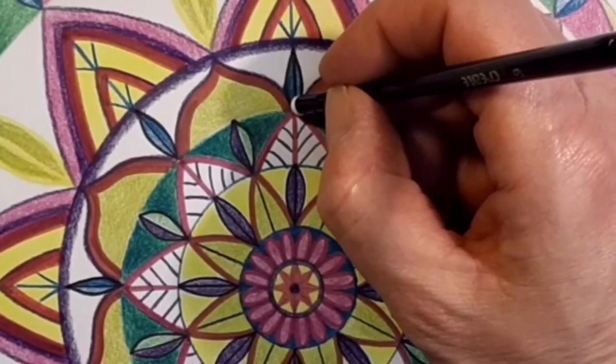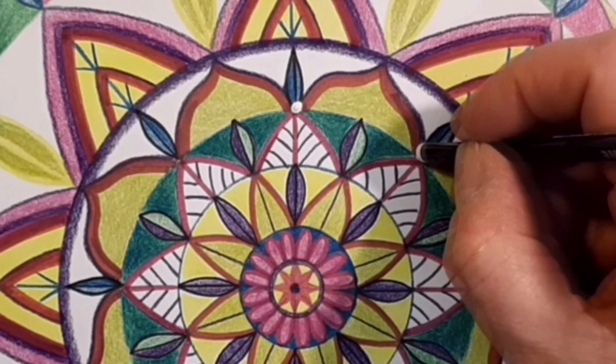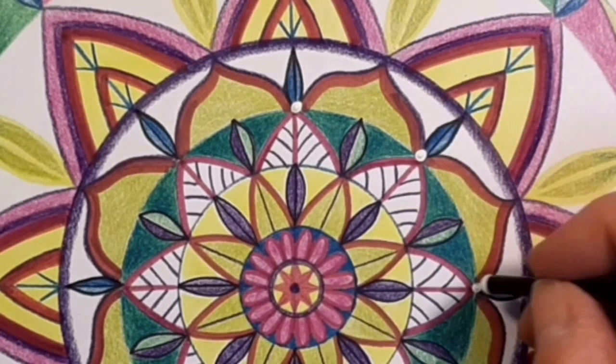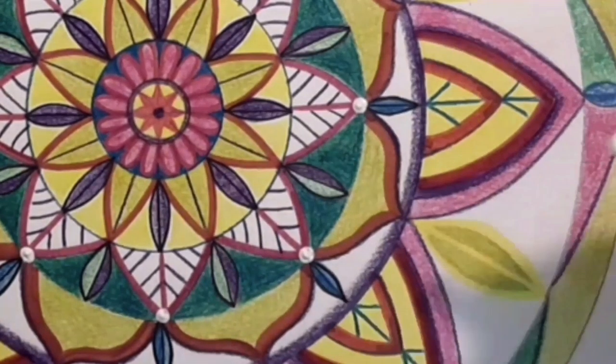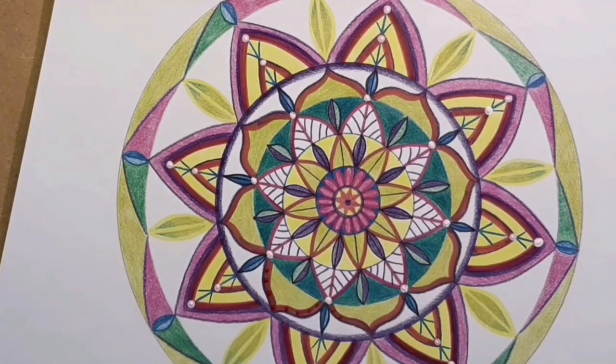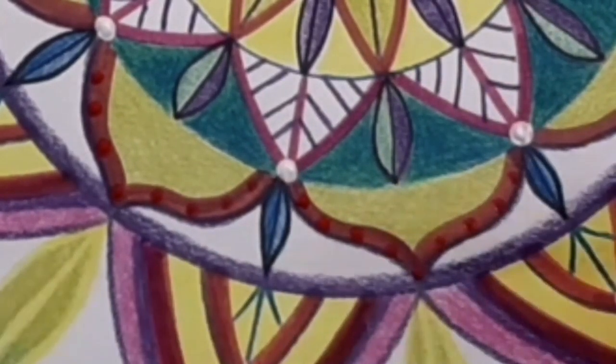Lastly, if you want to add some extra decoration, you could add some paint dots. I'm using acrylic paint and the wrong end of the paintbrush, but you could also use a cotton bud or the tip of a pencil and just dip it directly into the tube of the paint.